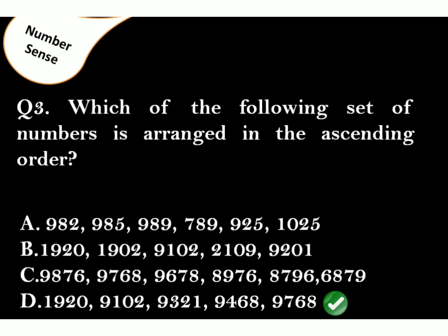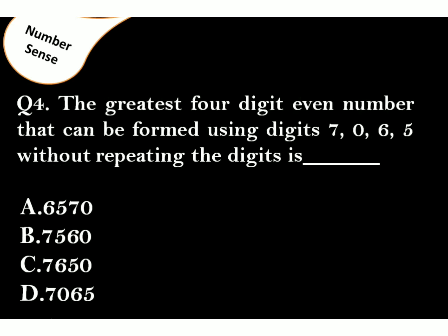Question 4. The greatest 4-digit even number that can be formed using digits 7065 without repeating the digits is. Correct answer is Option C. To form greatest 4-digit number, write the numbers in descending order and make sure on the unit's place there should be an even number.